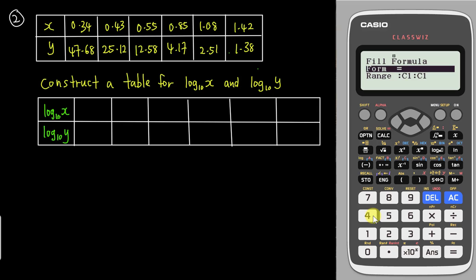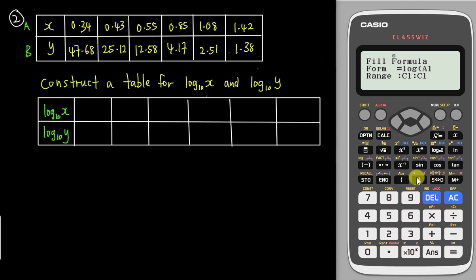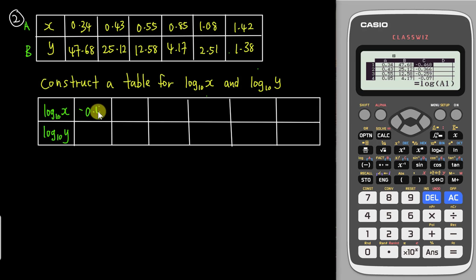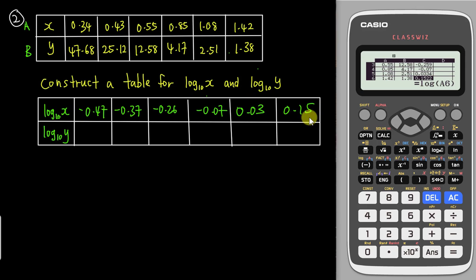Go to C1, tap the option key, choose Fill the Formula. The formula is log₁₀ of A — this is automatically log₁₀ since you cannot choose a different base. Enter Alpha A1 to specify the first cell, set the range from C1 to C6, and tap Enter. Copy the results in two decimal places: −0.47, −0.37, −0.26, −0.07, 0.03, and 0.15. The values are increasing, so no mistake was made.